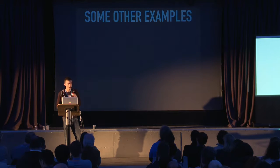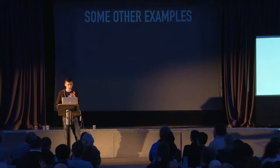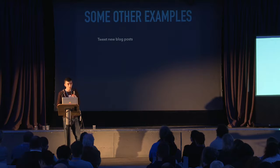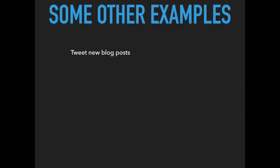What else can you do to automate your business? What other processes can you set up to automate? You could tweet new blog posts — you could create a Zap so that every time you publish a new blog post, and I think a lot of people here probably blog, that can automatically get posted to Twitter, Facebook, LinkedIn, or any other social media you want.